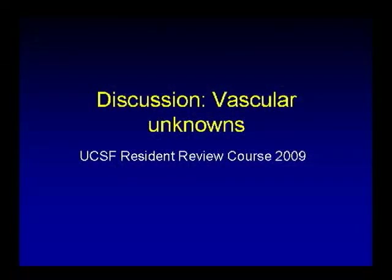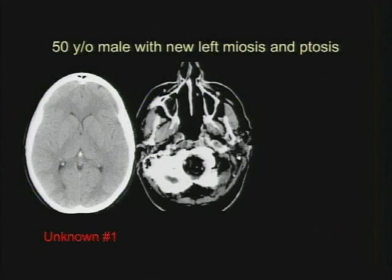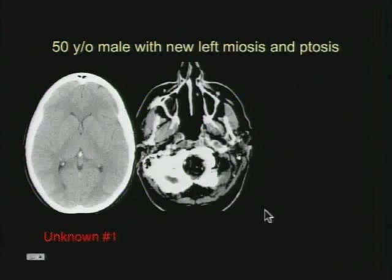We're looking at vascular unknowns today. Since we didn't have a vascular session, we're going to review some of the vascular pathology that you may see on the boards. The first case — the key is really the history. This patient came in with left miosis and ptosis, so this patient has Horner's syndrome, and had only a non-contrast CT and a post-contrast CT.